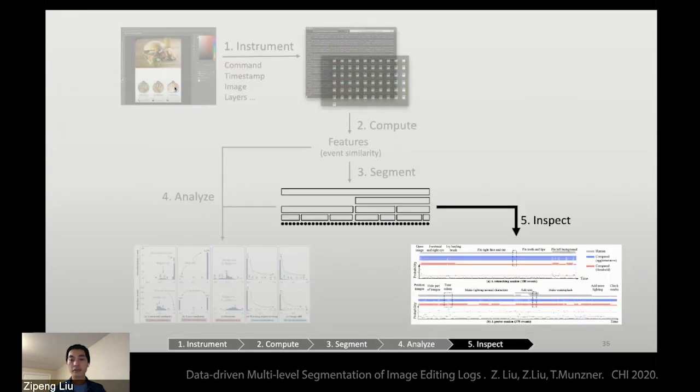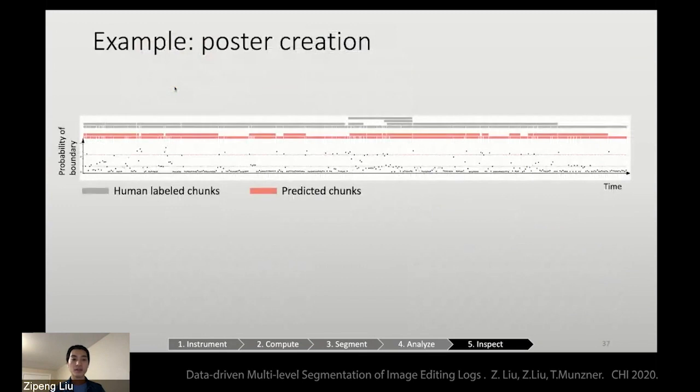Finally, we're going to inspect the segmentation results and compare it against the human labels. So this is the same chart you've seen before, where x-axis is time, y-axis is probability of boundary in the SVM, and the red rectangles are the predicted chunks. We added gray rectangles above them, which is the human-labeled chunks.